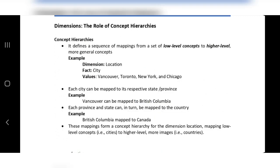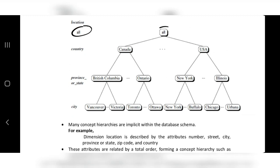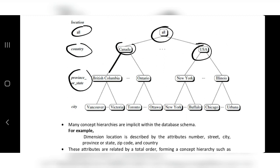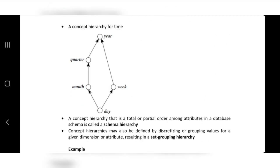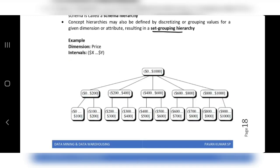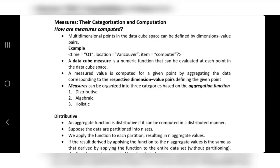Concept hierarchies represent levels from lower to higher groupings. For location, the hierarchy goes from all countries → specific countries → states → cities. For time, it goes from days → weeks/months → quarters → years. A set grouping hierarchy divides a large range into smaller sub-ranges — for example, 0–1000 divided into 0–200, 200–400, and so on, further subdivided into 100–200, etc.